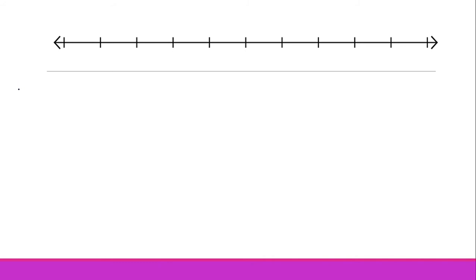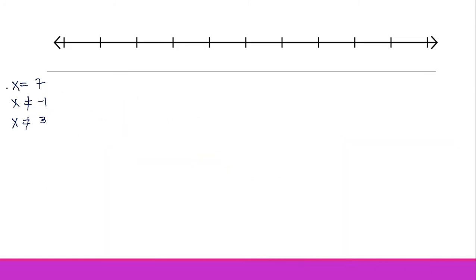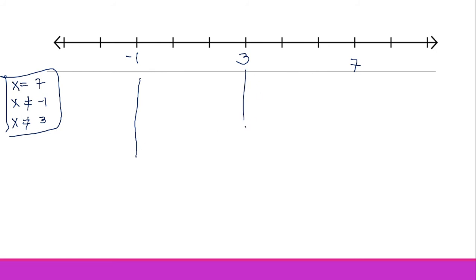We now have three critical values: x equals 7, x not equal to negative 1, and x not equal to positive 3. Plotting these on a number line with negative 1, then 3, then 7, we divide the number line into four regions: Region 1, Region 2, Region 3, and Region 4.